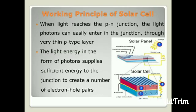Working principle: When light reaches the PN junction, the light photons can easily enter through the very thin P-type layer. The light energy in the form of photons supplies sufficient energy to the junction to create a number of electron-hole pairs.